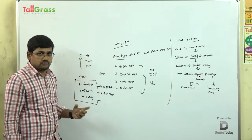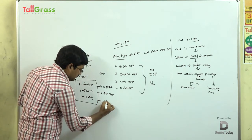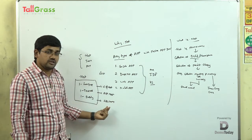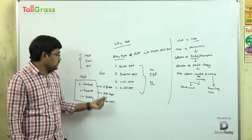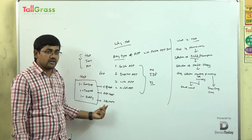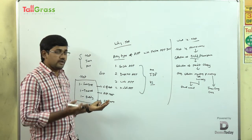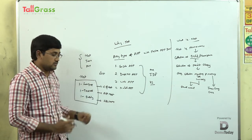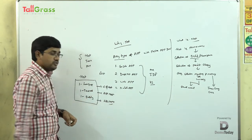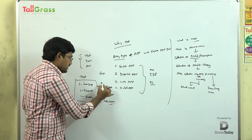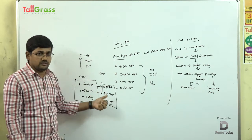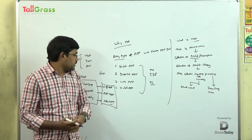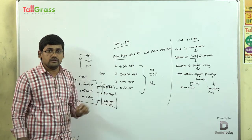For the database, we can choose any database, but we are learning SQL Server here. SQL Server is also developed by Microsoft, and .NET is also developed by Microsoft. Since both products are from the same company, there is compatibility between them. As a fresher, if you want to get a job, you need to know all these things. After learning this course, there are many openings for freshers in .NET.